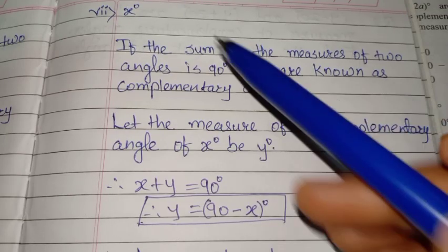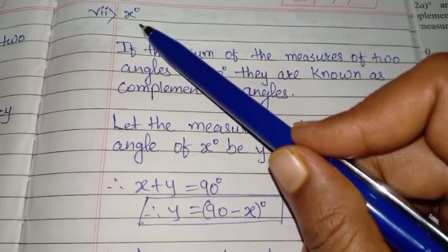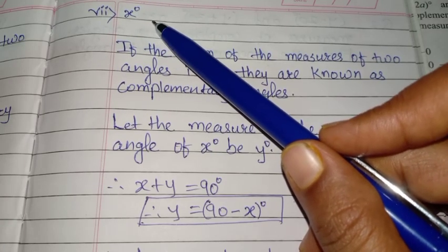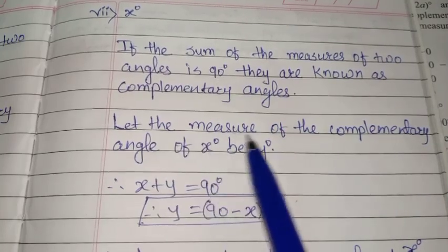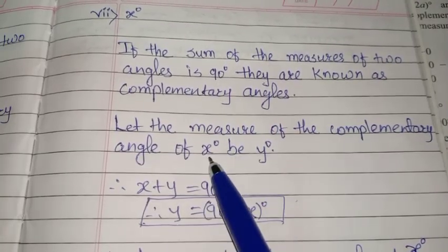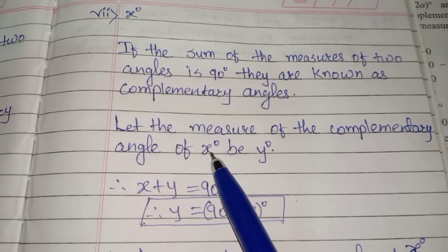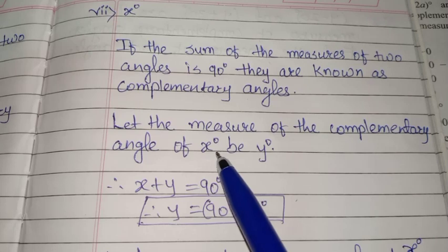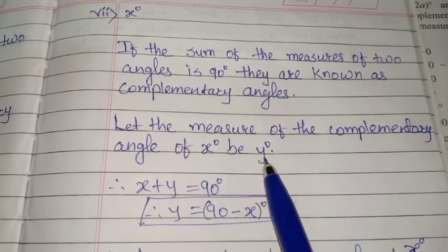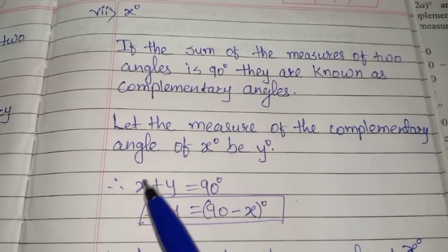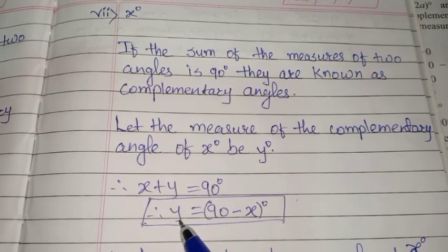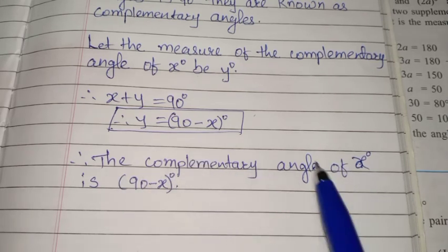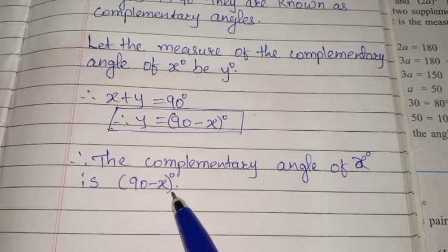The 7th one is x degrees. Here a letter is given instead of a number, but we follow the same pattern. Since x is already given as the angle, we consider another letter y degrees. So x + y = 90 degrees. Therefore, y = 90 − x. Therefore, the complementary angle of x degrees is (90 − x) degrees.